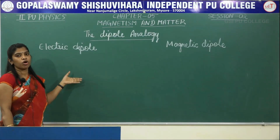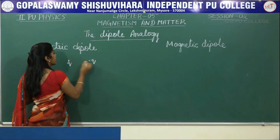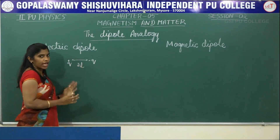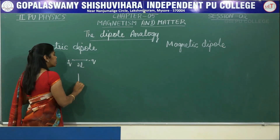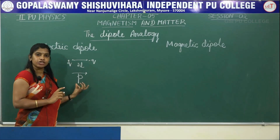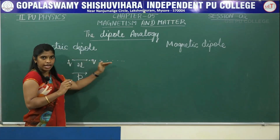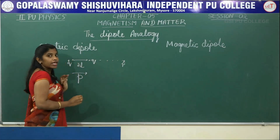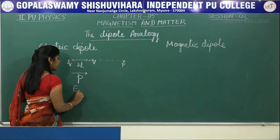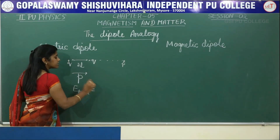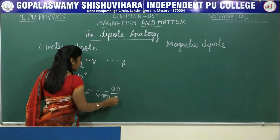You have already studied about the electric dipole. What is an electric dipole? If you have a positive charge and a negative charge separated by a small distance 2L, then this forms an electric dipole. This electric dipole has a dipole moment — the electric dipole moment — which is denoted by the letter P. Now if I draw an axial line on this electric dipole and mark a point P, the electric field on the axial line is given by E axial = 1/(4πε₀) · 2P/R³.